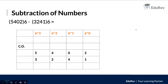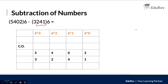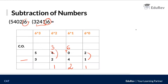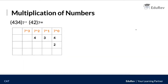Now let's look at one more example with base 6. The numbers are 5402 minus 3241. First, 2 minus 1 gives 1. Then 0 cannot be subtracted from 4, so we add the base 6 to 0, giving 6. Six minus 4 equals 2. Because of the borrow, 5 becomes 4, and then 4 minus 3 gives 1. The final answer is 2121.